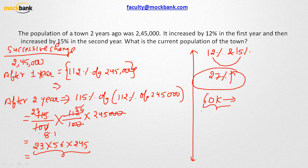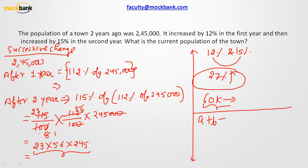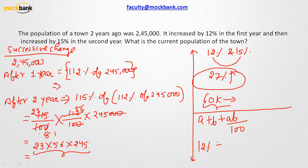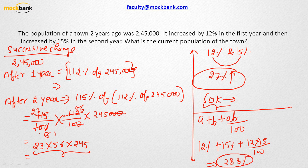I hope you are understanding. If you need to find out what is the actual change — the actual successive change — where we apply the A+B formula: A and B are two successive percentage changes. A is 12%, B is 15%, and this would be nothing but A plus B plus (A times B over 100), which is 12 plus 15 plus (12 times 15 over 100). And this comes out as 28.8%. That is the actual change after two successive years.